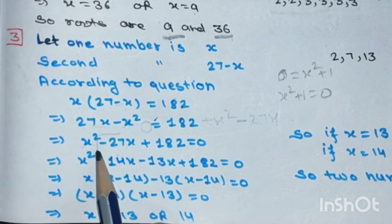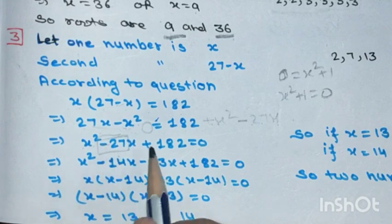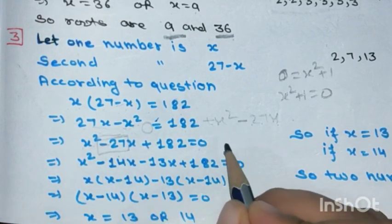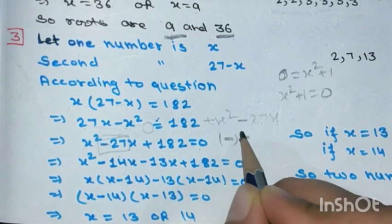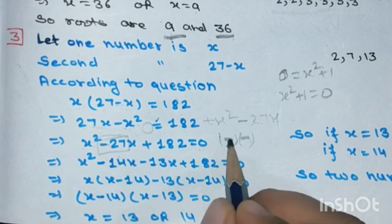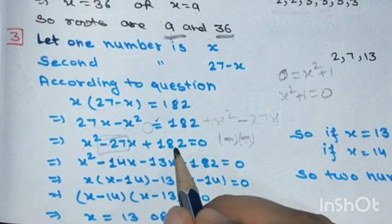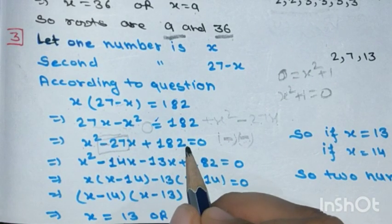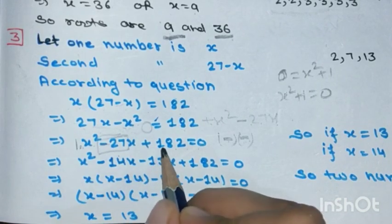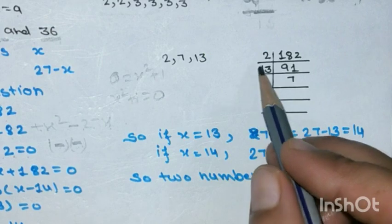Now we need to split -27x into two parts such that they add to -27 and multiply to 182. Since the middle term is negative and the last term is positive, both factors will be negative. The coefficient of x² is 1, so 1 × 182 = 182. We factorize 182: 2 × 7 × 13.